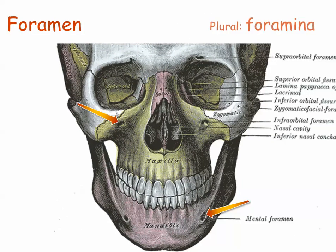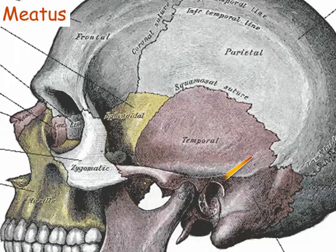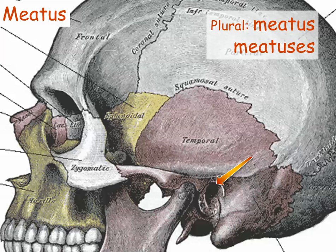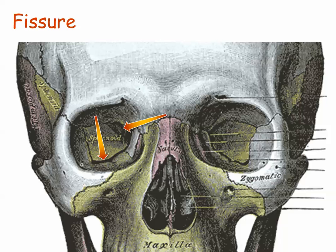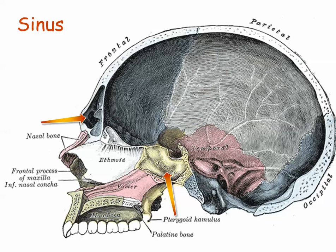A foramen is a rounded hole for vessels and nerves; the plural of foramen is foramina. A meatus is like a foramen but more tube-like, forming an elongated opening or channel; the plural of meatus is meatus, or you can say meatuses. Meatus literally means passage. A long crack-like hole, a kind of split in the bone to allow blood vessels and nerves to pass through, is called a fissure. And lastly, one that you probably already know: a sinus is a cavity or hollow space within a bone, such as any of the large sinuses found in some of the skull bones.